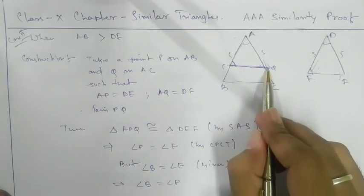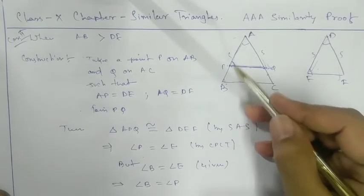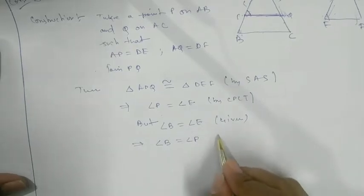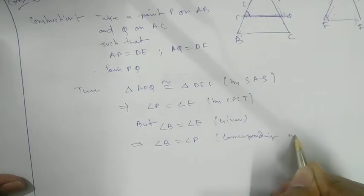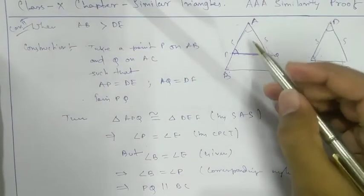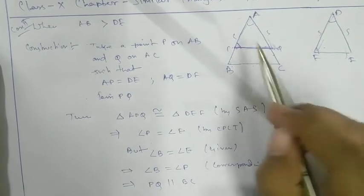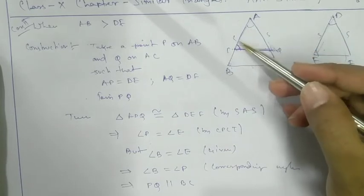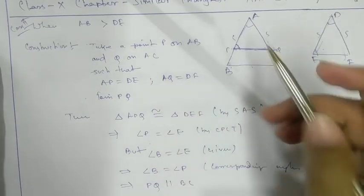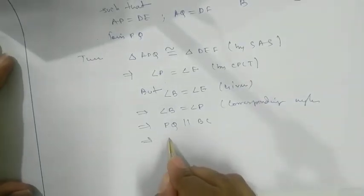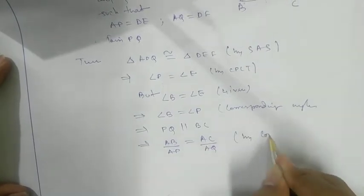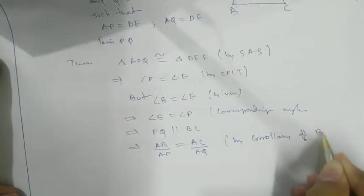Since angle B equals angle P and these are corresponding angles for line PQ with respect to triangle, this implies that PQ is parallel to BC. By the corollary of the Basic Proportionality Theorem (BPT), we can write AB/AP = AC/AQ.